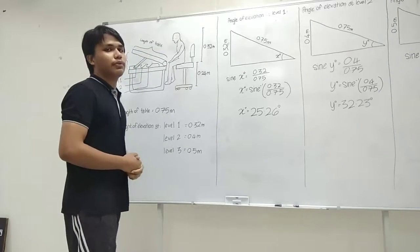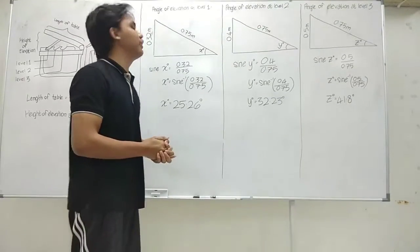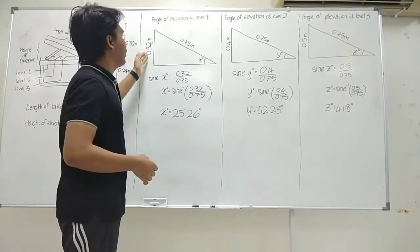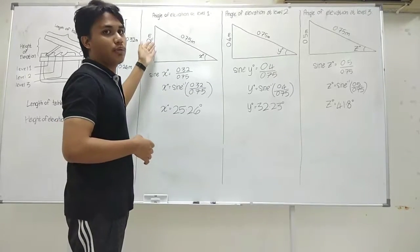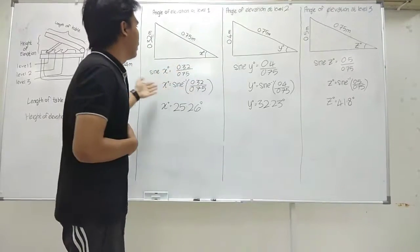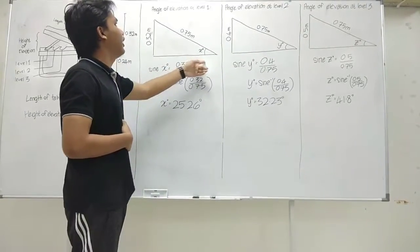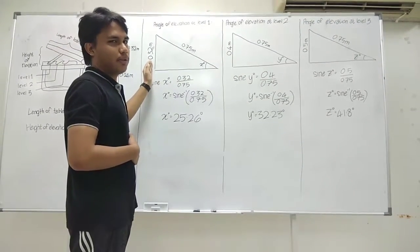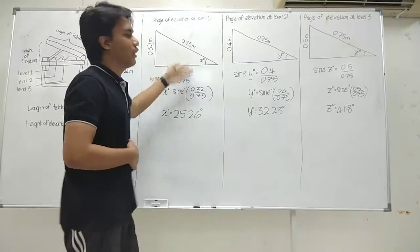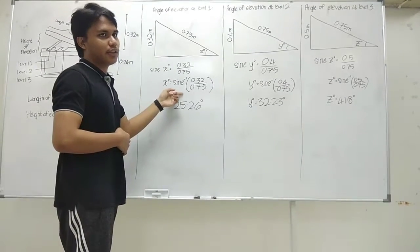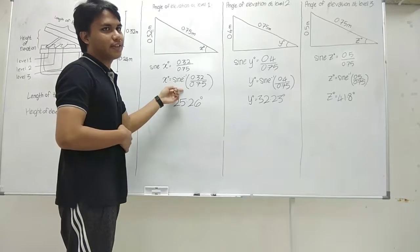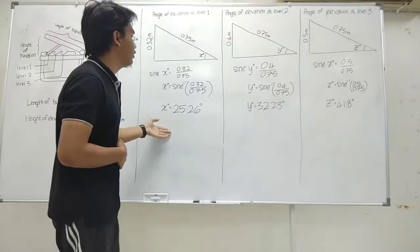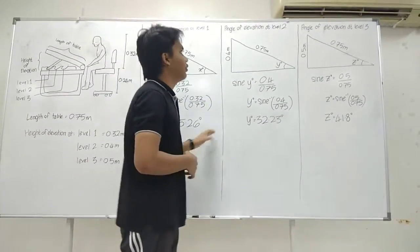The height at level 3 is 0.5 meters. For the calculation, we will apply the height of the table to solve this problem. First, we find the angle of elevation at level 1. The effective height at level 1 is 0.32 meters and the length of the table is 0.75 meters. We use sine: sine(x) equals 0.32 divided by 0.75. Moving sine to the other side, we get the inverse sine of 0.32 divided by 0.75, and the angle of elevation at level 1 is 25.26 degrees.